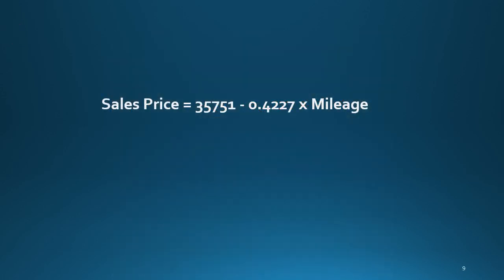So how is the regression equation useful? At ABC, we can use the equation to predict how mileage affects sales price. For instance, how much would we expect to make on a car with 25,000 miles? To make this prediction, we plug 25,000 into the equation. Using the equation, a car with 25,000 miles will sell for about 25,000 dollars.